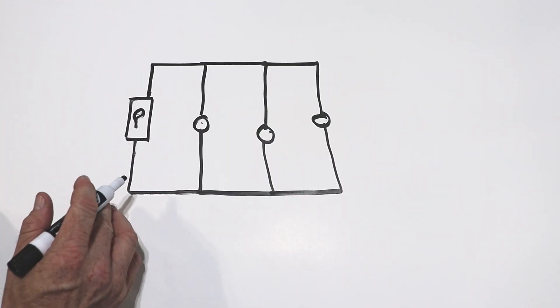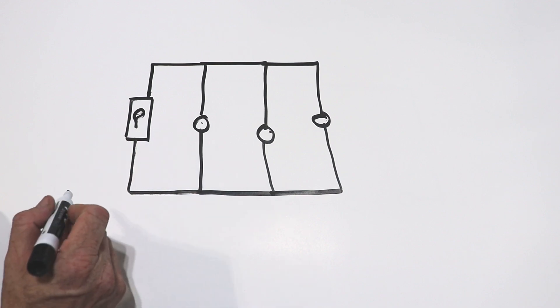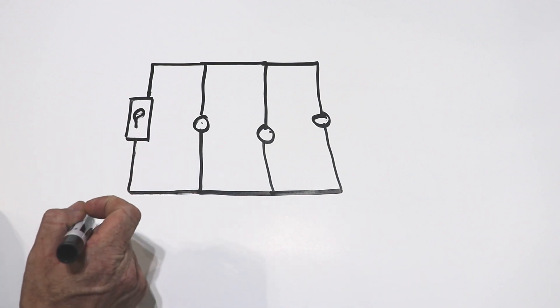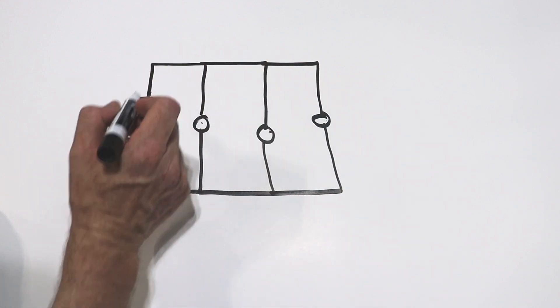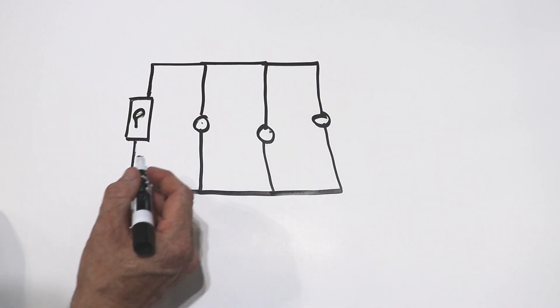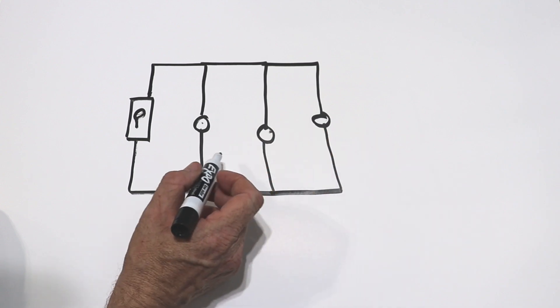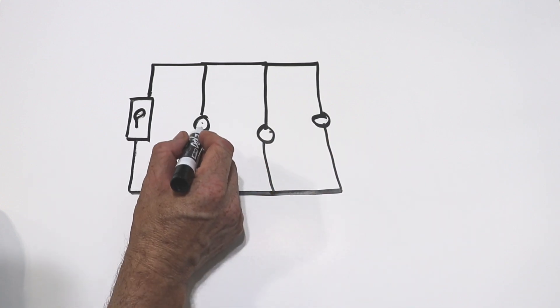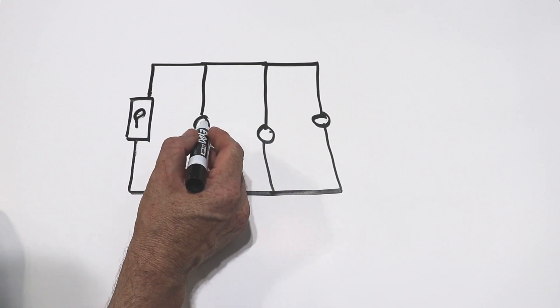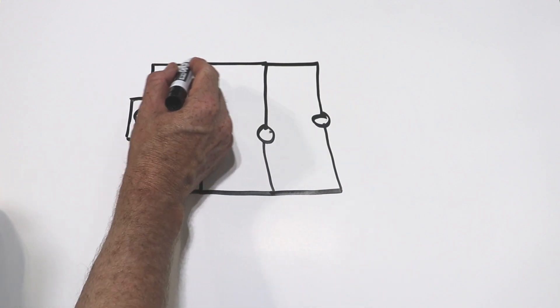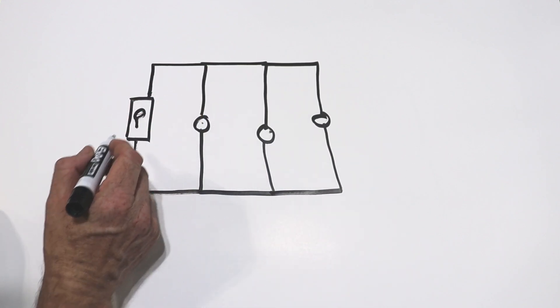In a parallel circuit, you still have your power source, but it's different than a series circuit, as you have multiple paths for the electrons or the electricity to flow around the circuit. So your devices are wired such that power goes up to the device, whether it's an outlet or a light, and then the power returns back to the power source.